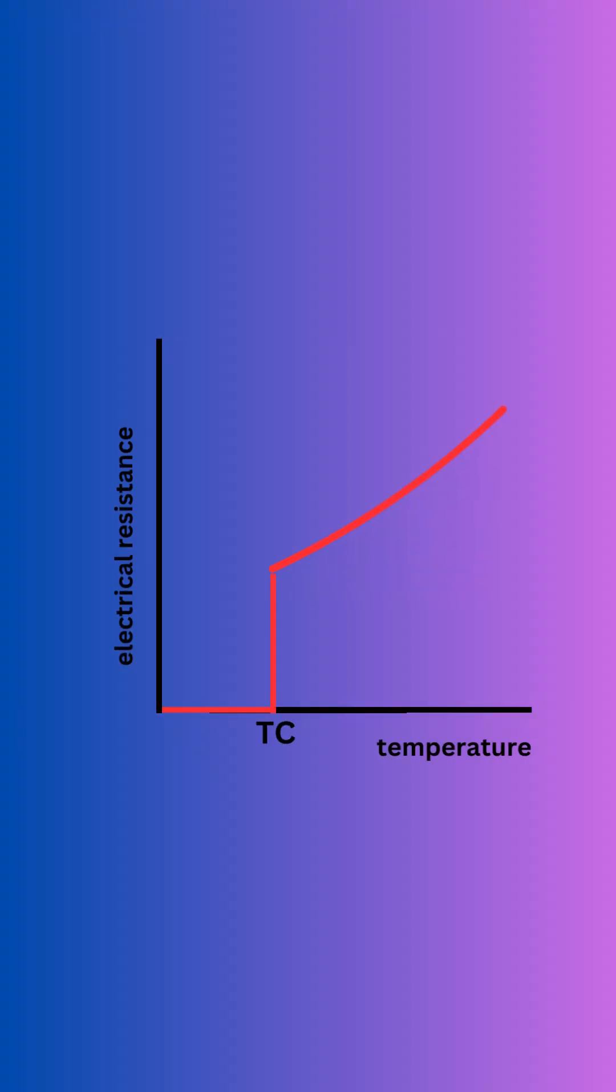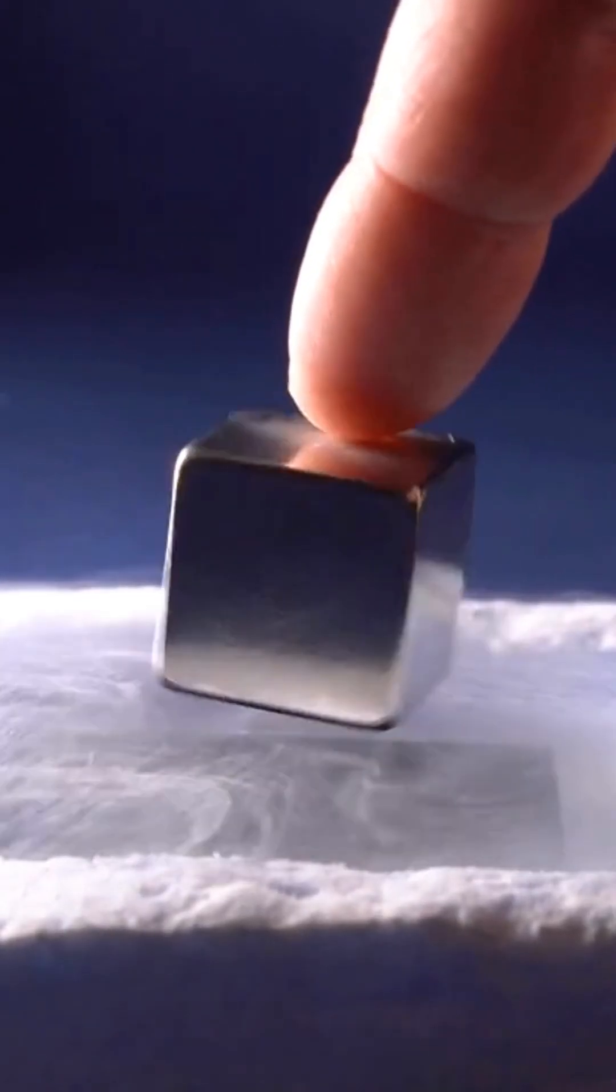Superconductors are materials whose electrical resistance drops to exactly zero below a critical temperature. This critical temperature is way below zero degrees Celsius.